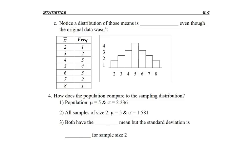Now we're going to look at a distribution of all those means. We'll make a frequency table and a frequency distribution. The way I got this frequency distribution is I considered the averages, the x-bars, as my data. I found how many times was the average 2. According to this, I only found it once.